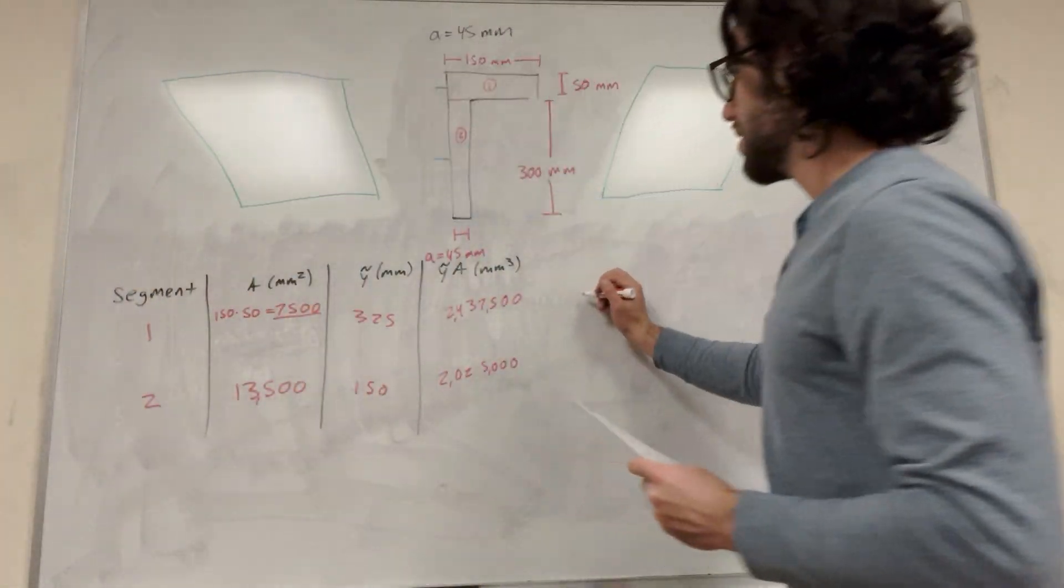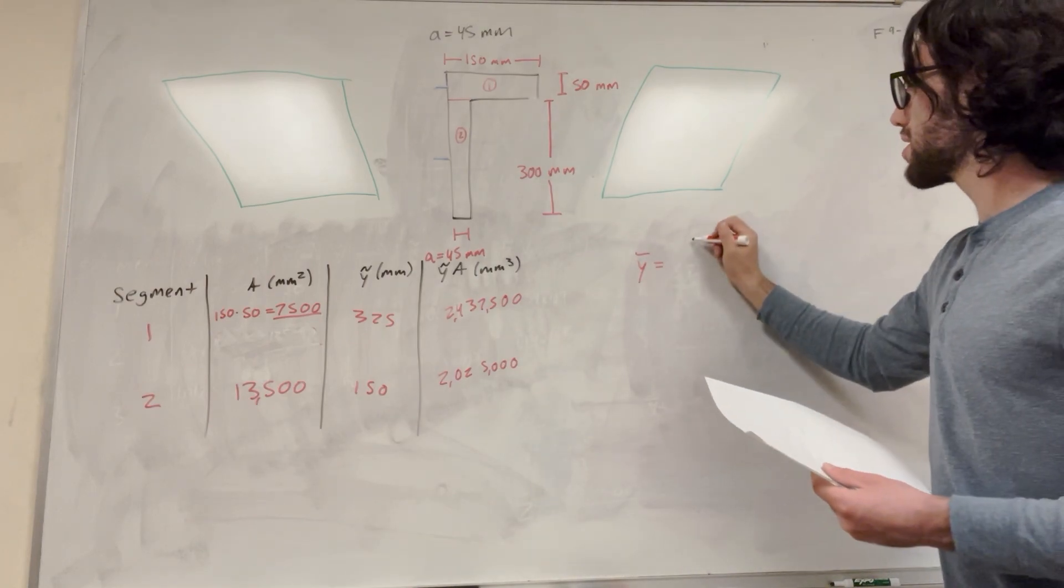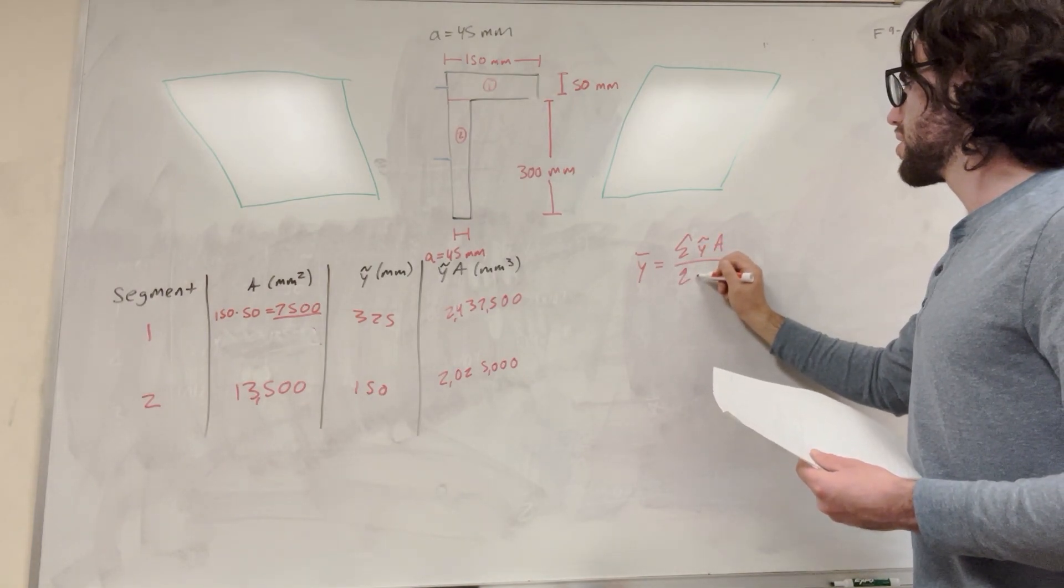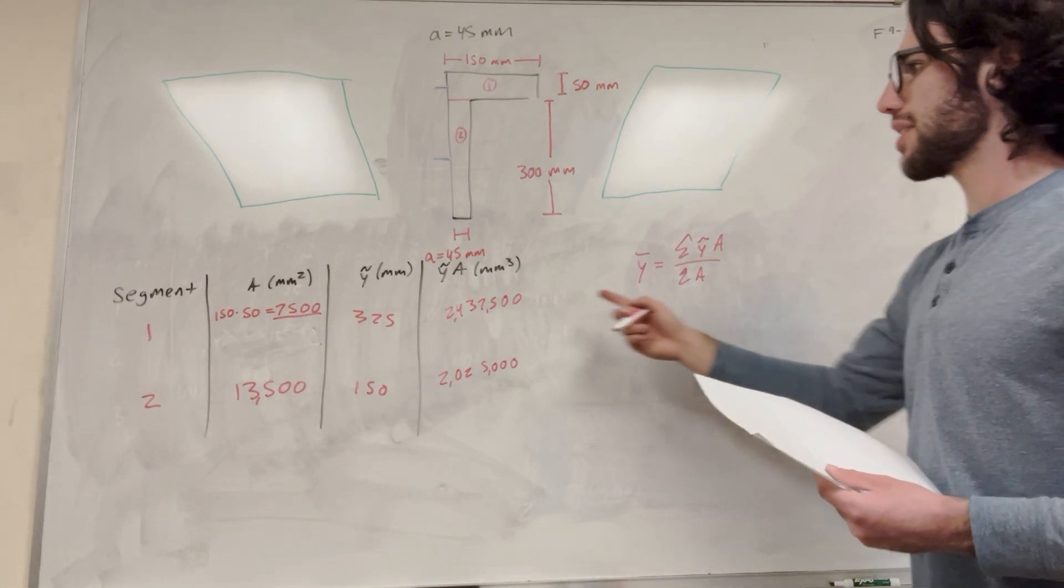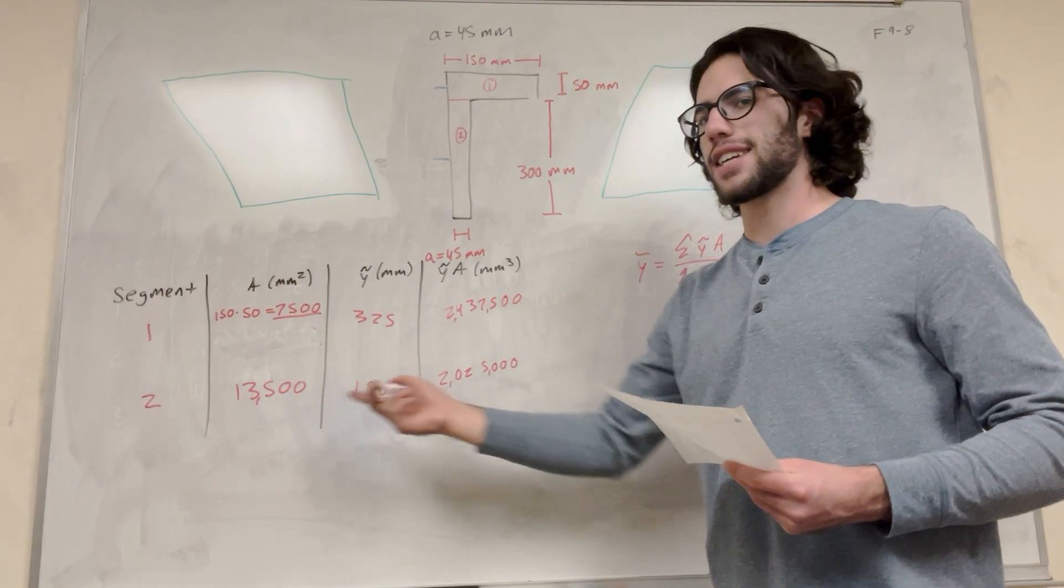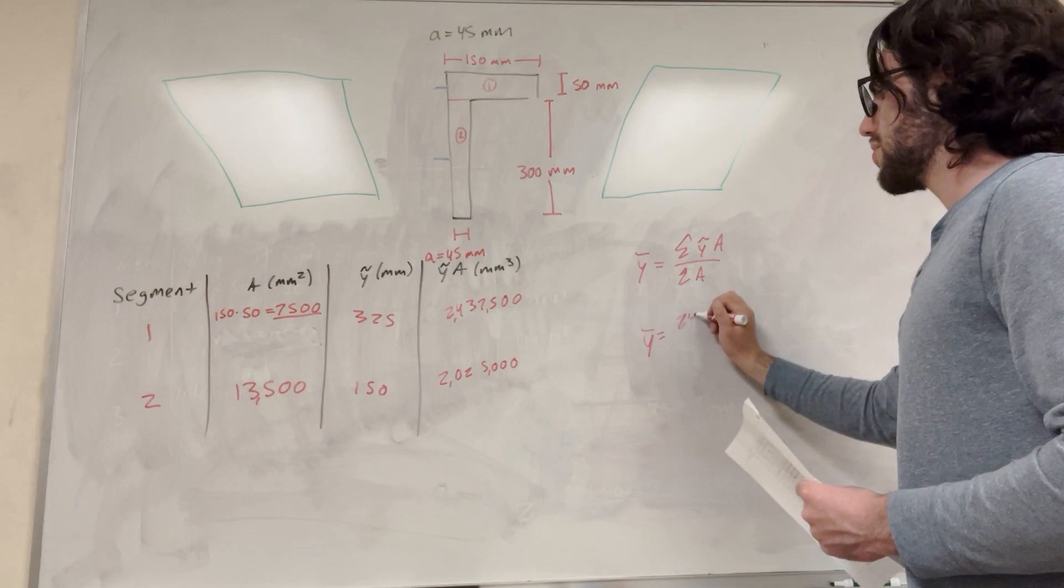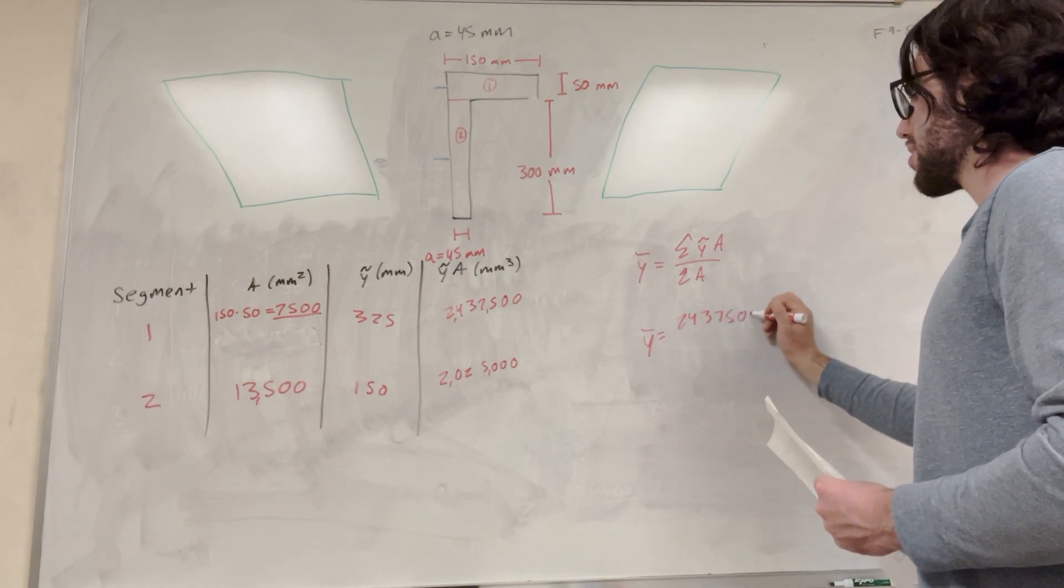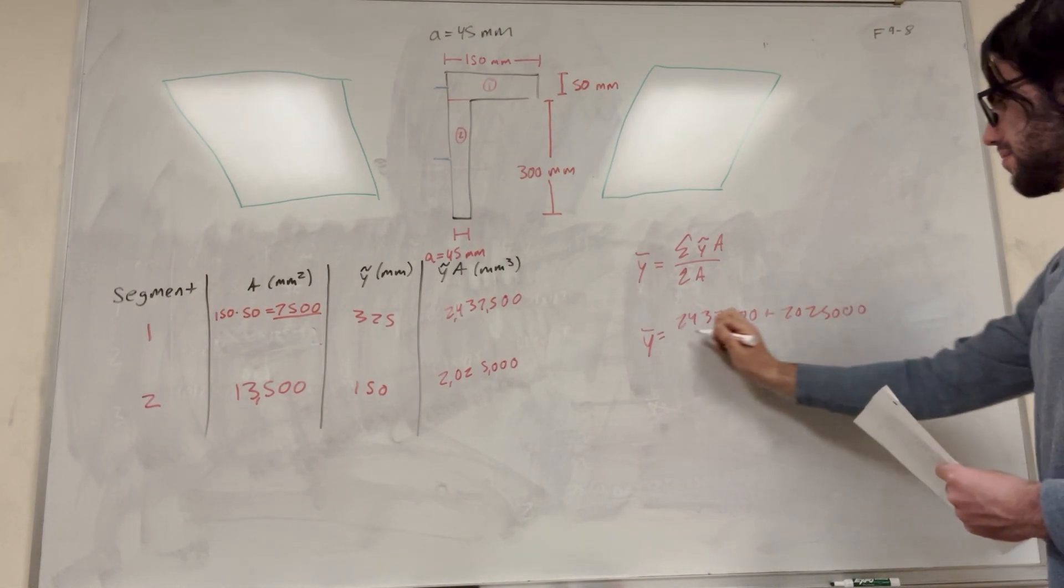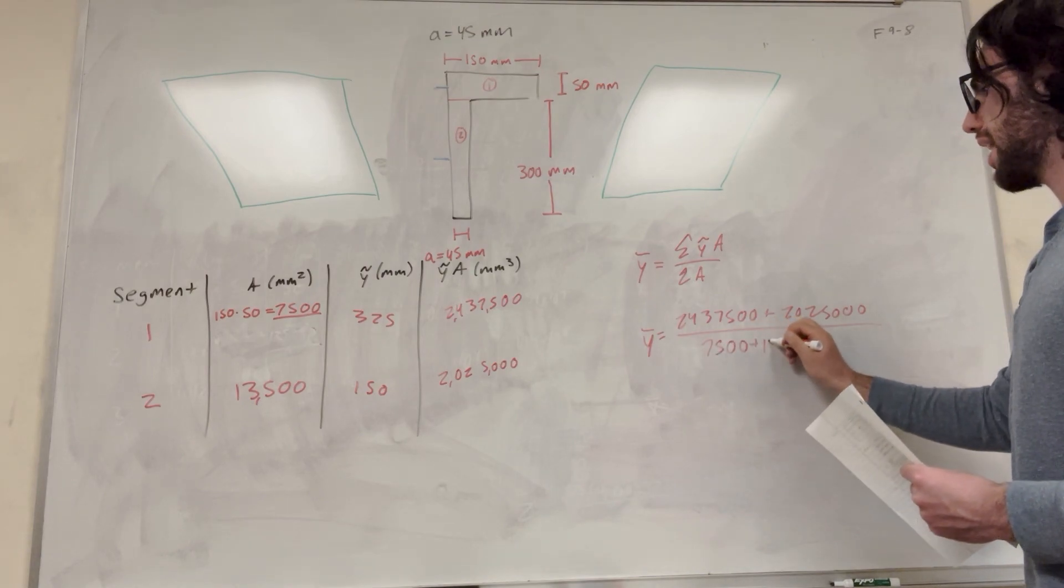So literally what we're going to do now is we're going to say y bar, right? We know that our equation for this is sum of y tilde area over the sum of the area. Right? So we have areas, we have these two areas and we have y tilde area. So we're going to add these together and divide them by these two being added together. It's that simple. So y tilde is equal to, we're going to add these up. So 243,750 plus 202,500 over 7,500 plus 13,500.